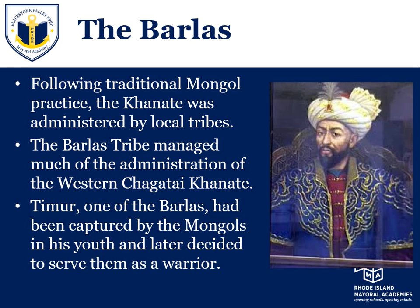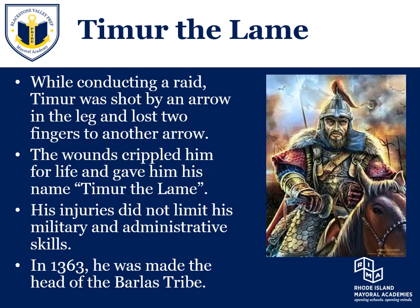It was in his youth, while serving the Mongols, that Timur conducted a raid and was shot by an arrow in the leg, and another arrow hit his hand — he loses two fingers on his right hand. It's from these wounds that he is crippled for life; his leg is no longer useful to him. That's how he gets the name Timur the Lame — 'lame' implying an injury that impedes movement. But that does not stop him from being a brilliant military leader, a great strategic planner, a wonderful administrator, and it does not keep him from, in 1363, becoming the head of the Barlas tribe.